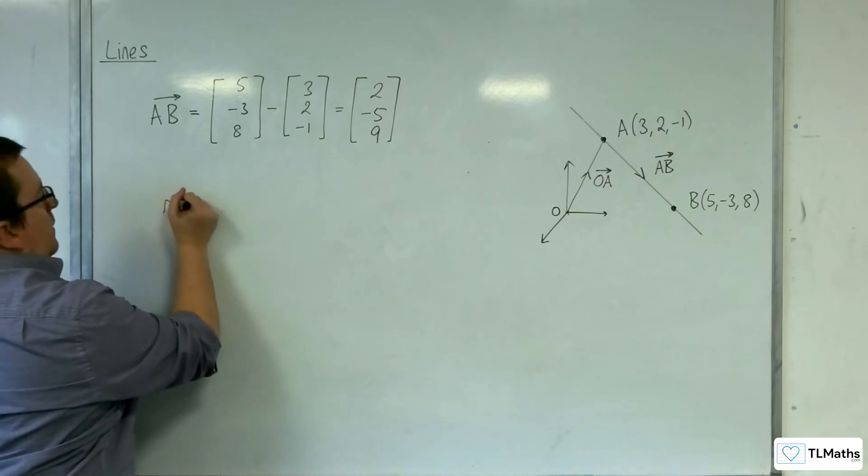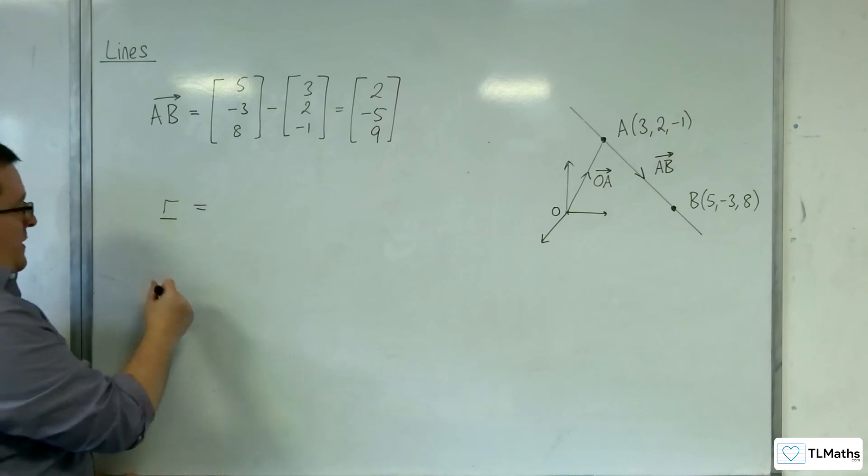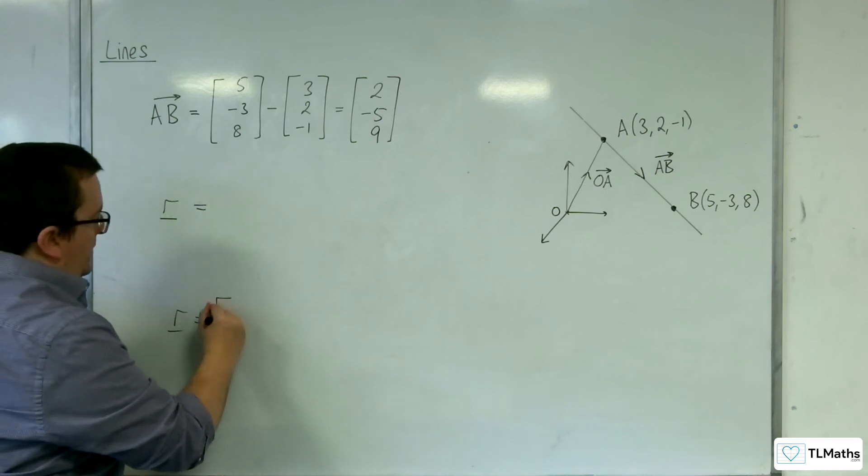So the vector equation of a line, remember, starts with R, which in this case will represent X, Y, Z.